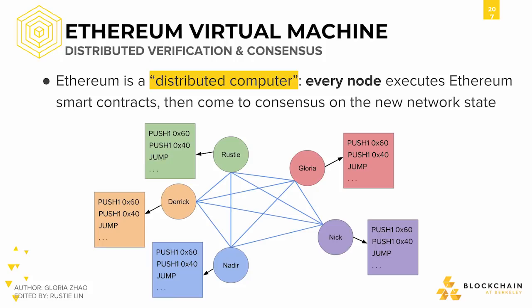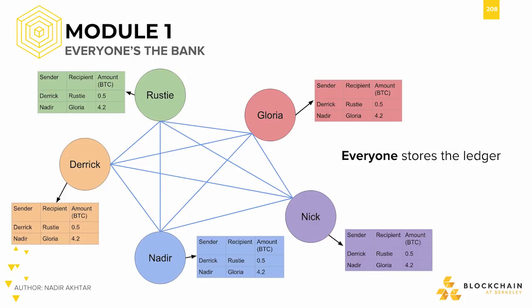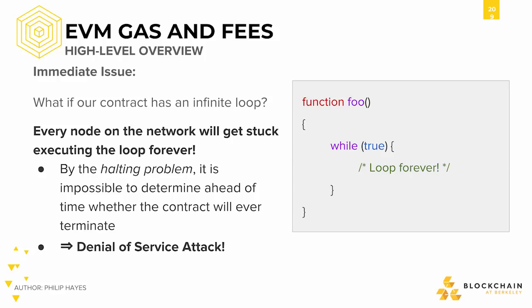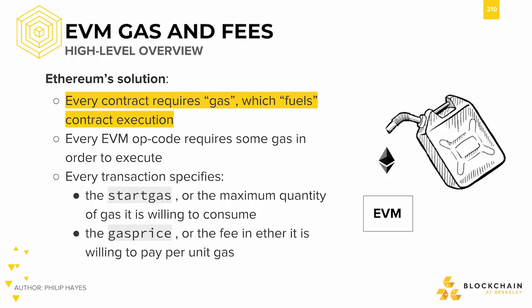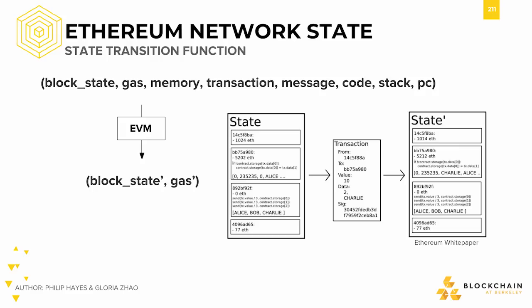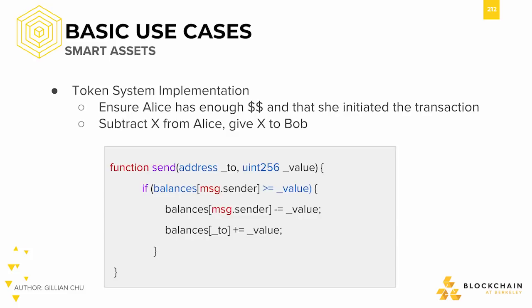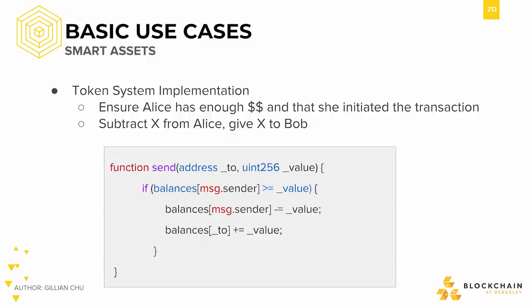This is similar to how in Bitcoin everyone was the bank, except in Ethereum everyone stores the state of computation. We also examined gas and fees in Ethereum, which prevents someone from sending infinitely looping code to the network. The gas fuels the contract execution and prevents denial-of-service attacks. Each transaction translates the block state, gas, memory, and other inputs into a new block state through the EVM. We then looked at some basic use cases for smart contracts, such as smart assets, multi-signature wallets, and proof of existence, and compared those with centralized solutions. We posed this important question at the very end: why is using a blockchain better than a centralized database? That concluded the first half of the course.